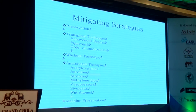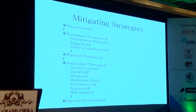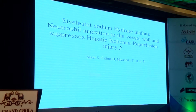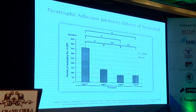A number of antioxidant therapies have been tried, but none has been shown to be effective. Acetylcysteine has been shown in a randomized trial to not be effective. Sivelestat, a neutrophil elastase inhibitor, shows some promise and reflects the importance of the role neutrophils play in reperfusion injury. Machine preservation, however, really seems to be the answer here.